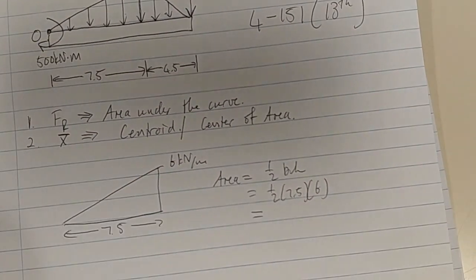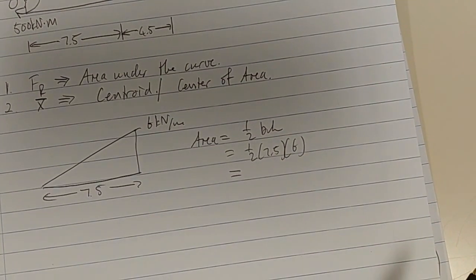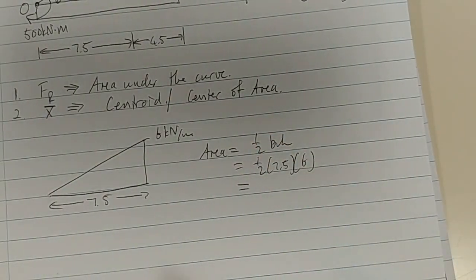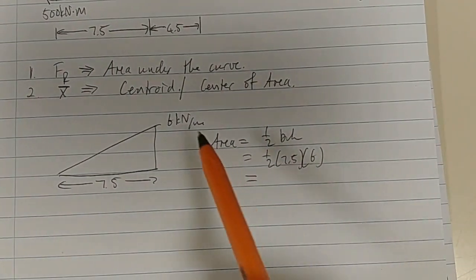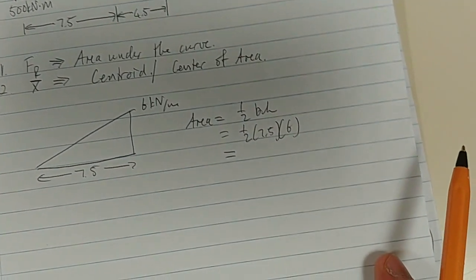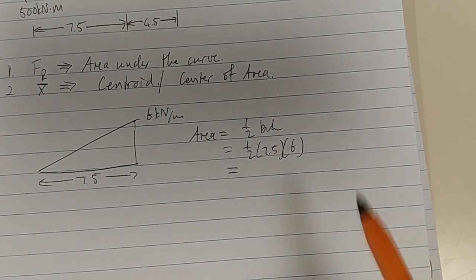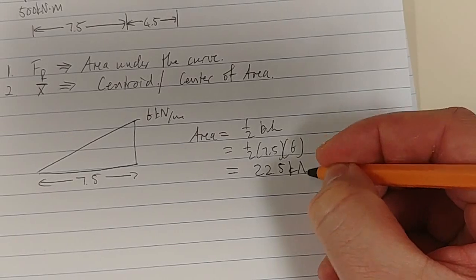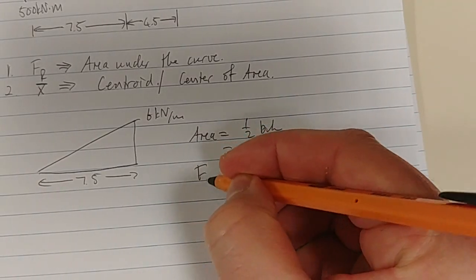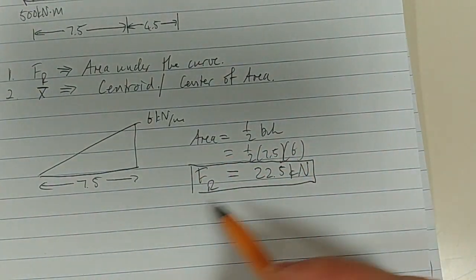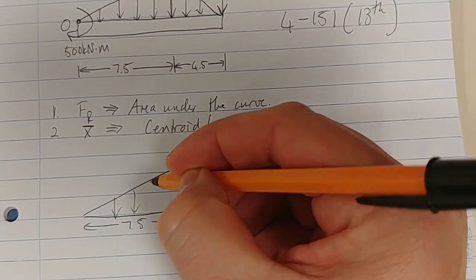0.5 times 7.5 times 6. And guys, if I make a mistake, please forgive me. It's crucial to get the right answer, but if I make a mistake here and there, don't freak out. Just look at the method and compare your answers with the back. This equals 22.5 kN. That's your force, the force due to this distributed load.